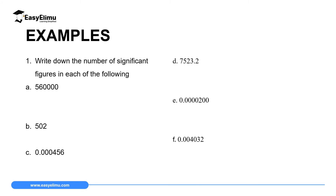Let's handle a few questions. The first question asks us to write down the number of significant figures in each of the following. Number A: 560,000. The zeros appear on the right side of an integer, so they can be significant or not. If we consider them significant, it has 6 significant figures; if not, then it has 2 significant figures — so this one has two possible answers. Number B: 502. Zero appears between non-zero digits, so it is significant, giving three significant figures. Number C: 0.000456. Zeros on the left are insignificant, so we have three significant figures: 4, 5, and 6.